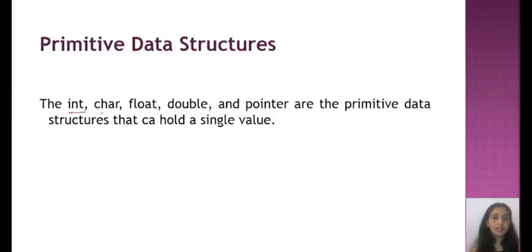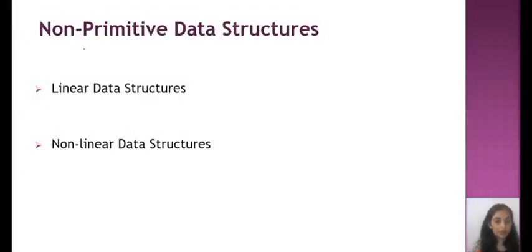Primitive data structures: the integer, character, float, double, and pointer are the primitive data structures. The basic values are integer, character, and float. Integer values are numbers, zero to nine type. Character values are a to z, small a to small z and capital A to capital Z. Float values are the decimal values. Decimal value means 2.98, this type of values are float values.